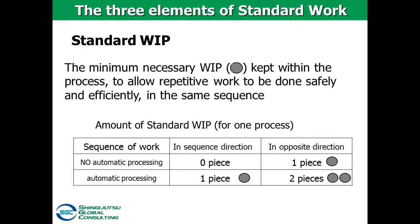The third element is standard work in process. Standard work in process means the minimum necessary work in progress in the process to carry out standard work efficiently. If the standard work in process is not set, muda such as waiting will occur. The number of standard work in process depends on the work sequence and whether or not the equipment has an automatic feed function. It is important to set the standard work in process where needed for efficient, waste-free work.